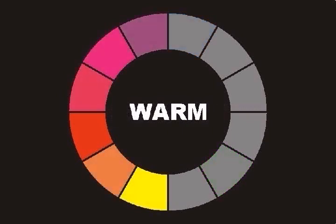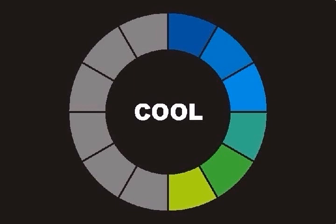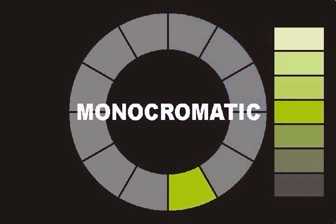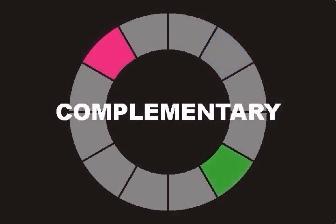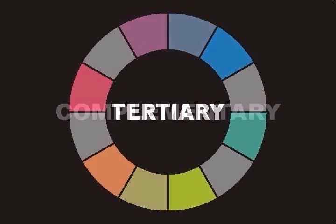In Grade 3, students learn about warm and cool colors and the feelings that these groups of colors can create. In Grade 4, students learn about monochromatic color schemes. In Grade 5, students learn to identify complementary or opposite colors. In Grade 6, students learn to identify color relationships in color wheels, including tertiary colors.